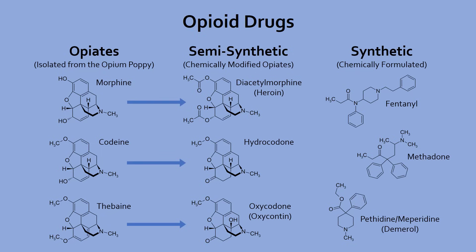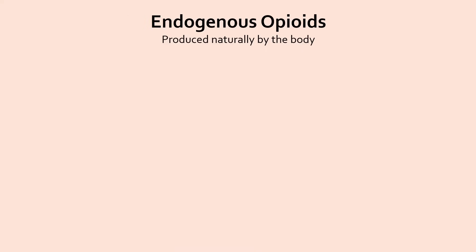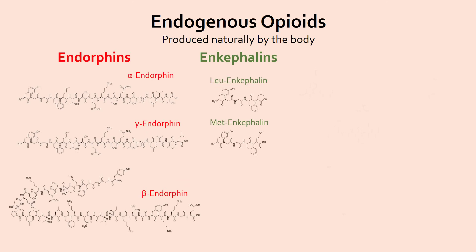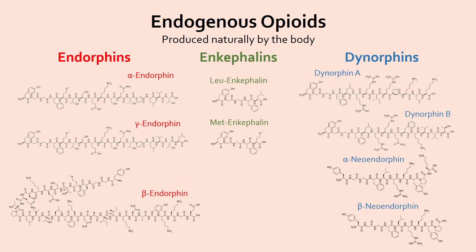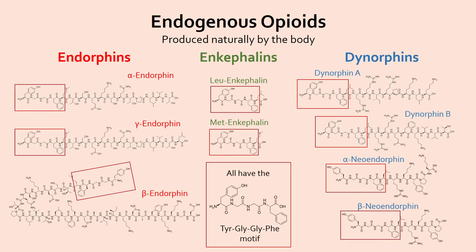They mimic the effects of small pain-killing peptides our body naturally produces. These are called endogenous opioids and can be classified as endorphins, enkephalins, and dynorphins, which are made of amino acids and share a common amino acid chain motif: tyrosine, glycine, glycine, phenylalanine.